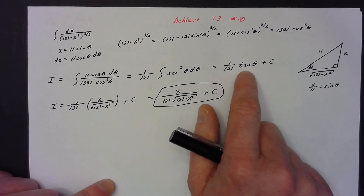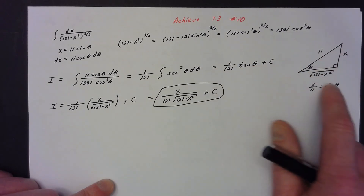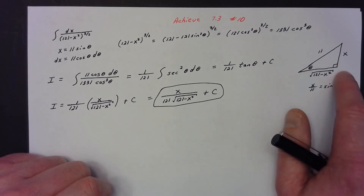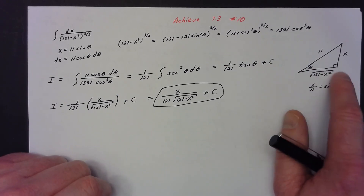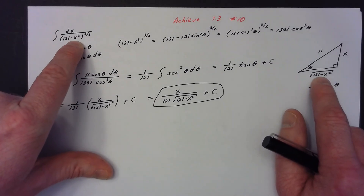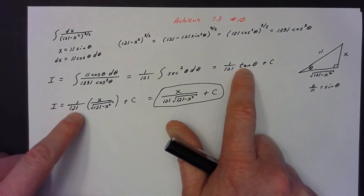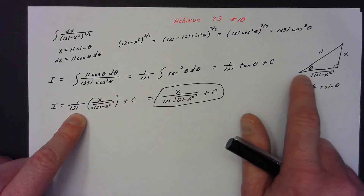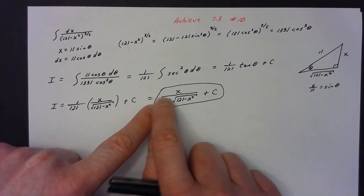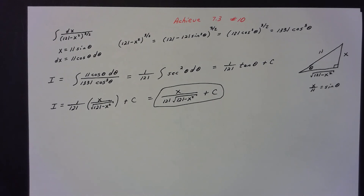I needed to get my answer back in terms of x, so I used the trig triangle. I know sin θ = x/11, meaning opposite is x, hypotenuse is 11, and the adjacent side is √(121 − x²). Tangent is opposite over adjacent, so tan θ = x / √(121 − x²). The final answer is x / (121 · √(121 − x²)) plus the constant of integration.